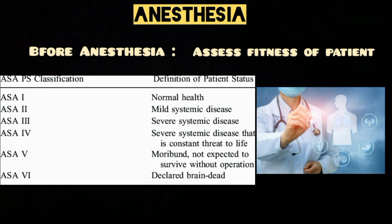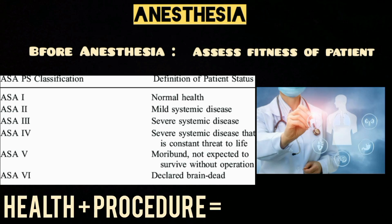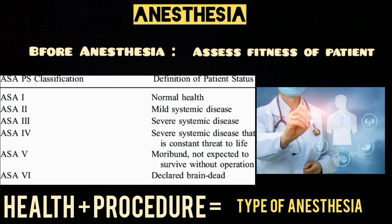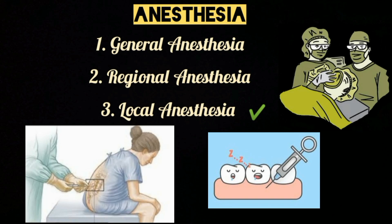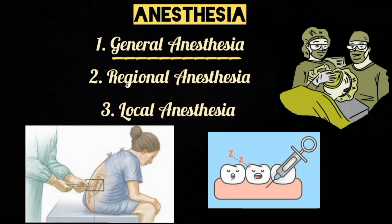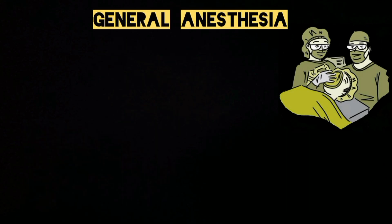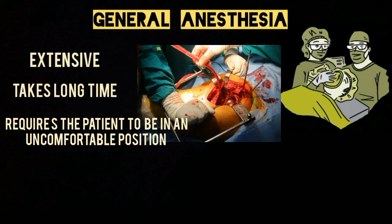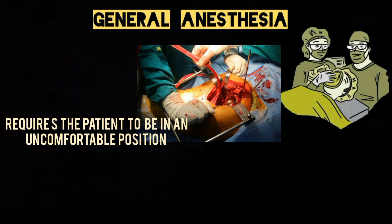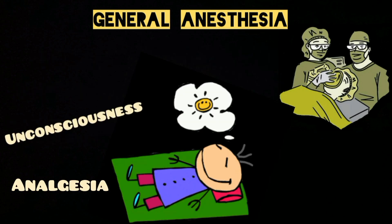Based on the health of the patient and the procedure, the anesthetist will administer one of the following types of anesthesia: general, regional, or local — or even a combination. General anesthesia is given if the procedure is extensive, takes a long time, or requires the patient to be in an uncomfortable position. It induces a triad of unconsciousness, analgesia, and muscle relaxation.